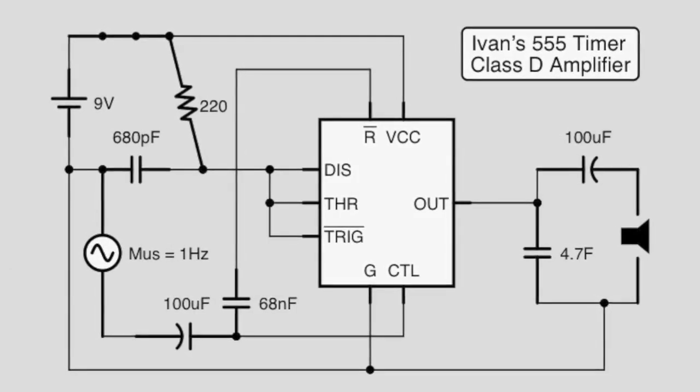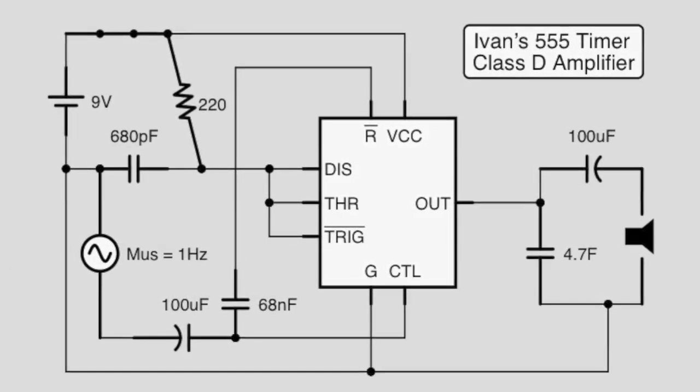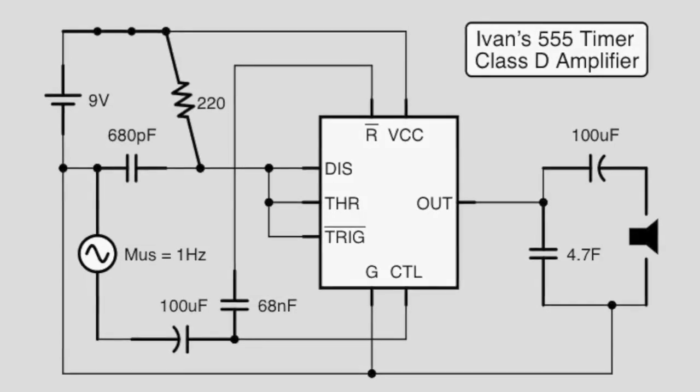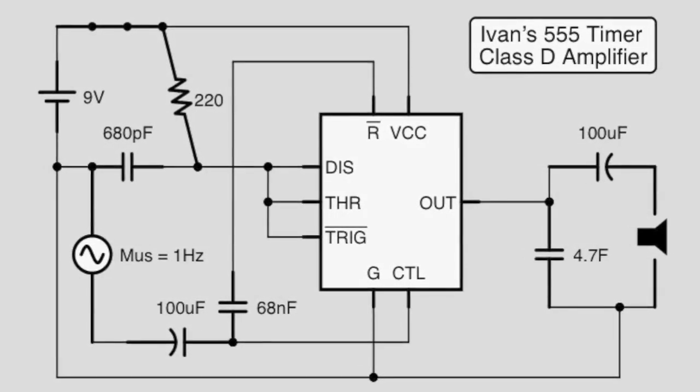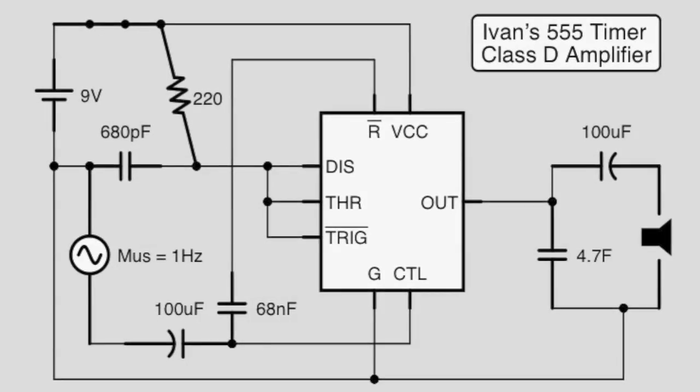Alright, so as can be seen in the circuit diagram, this circuit consists of essentially a modified 555 timer astable multivibrator with an audio low pass filter on the output.